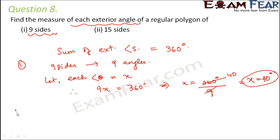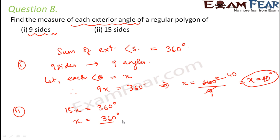Similarly for the second part, which has 15 sides. 15 sides means 15 angles. We replace 9 with 15, so 15x = 360°, which gives x = 360 ÷ 15 = 24 degrees.